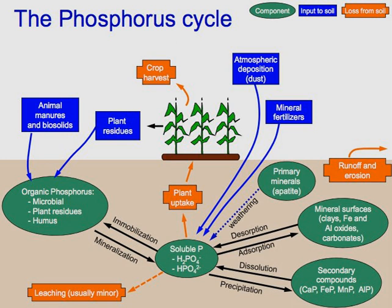Locally, transformations of phosphorus are chemical, biological, and microbiological. The major long-term transfers in the global cycle, however, are driven by tectonic movements in geologic time. Humans have caused major changes to the global phosphorus cycle through shipping of phosphorus minerals and use of phosphorus fertilizer, and also the shipping of food from farms to cities, where it is lost as effluent.